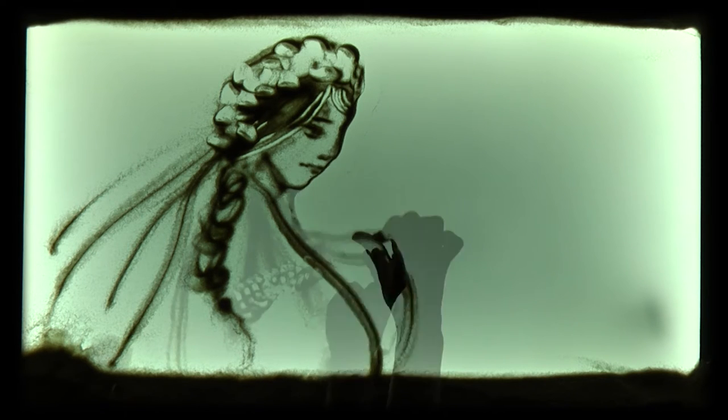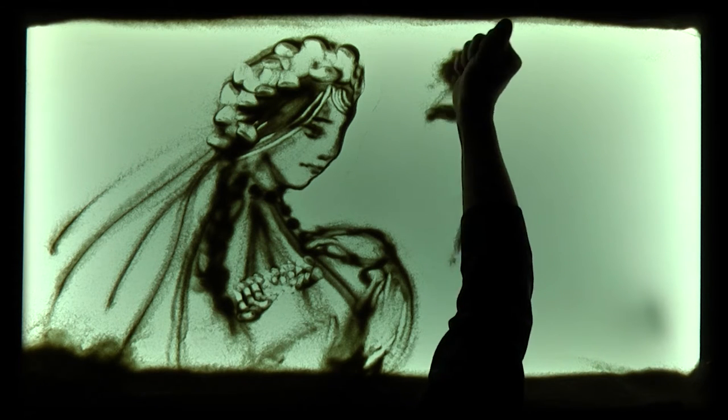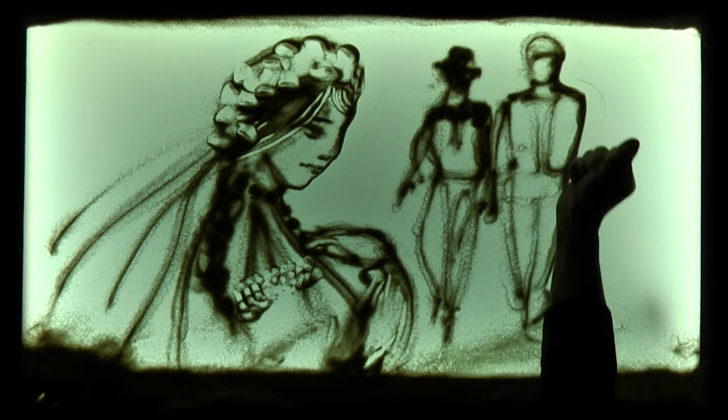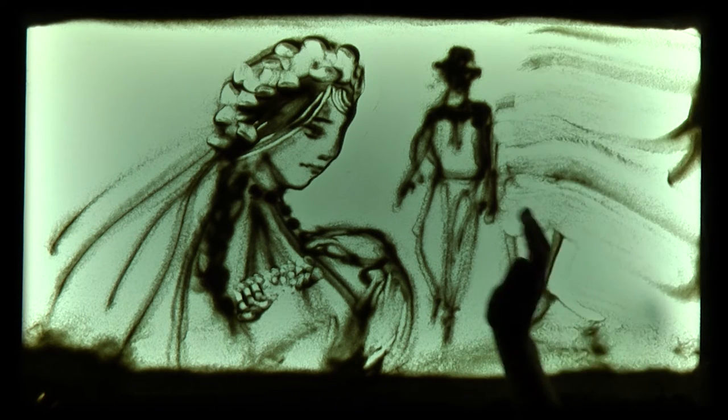Оксана з дитинства тісно дружила з Іваном та Федором, і ще рік тому не змогла б комусь віддати переваги. Однак останнім часом їй більше симпатизував Федір, який невтомно увився поруч.